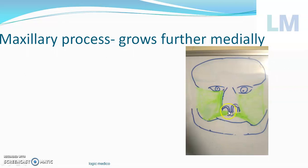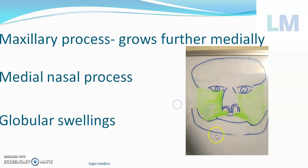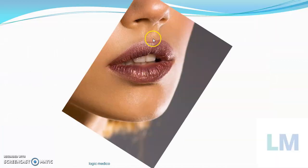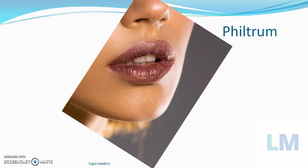Further, the maxillary process grows medially and touches the medial nasal process. Both medial nasal processes give tiny projections called globular swellings. Both globular swellings unite with one another to form the philtrum of the upper lip — the depressed area. The remaining portion of the maxillary process contributes to the lateral portions of the upper lip. So the philtrum is formed by globular swellings of the medial nasal processes, and the lateral portions are from the maxillary processes.